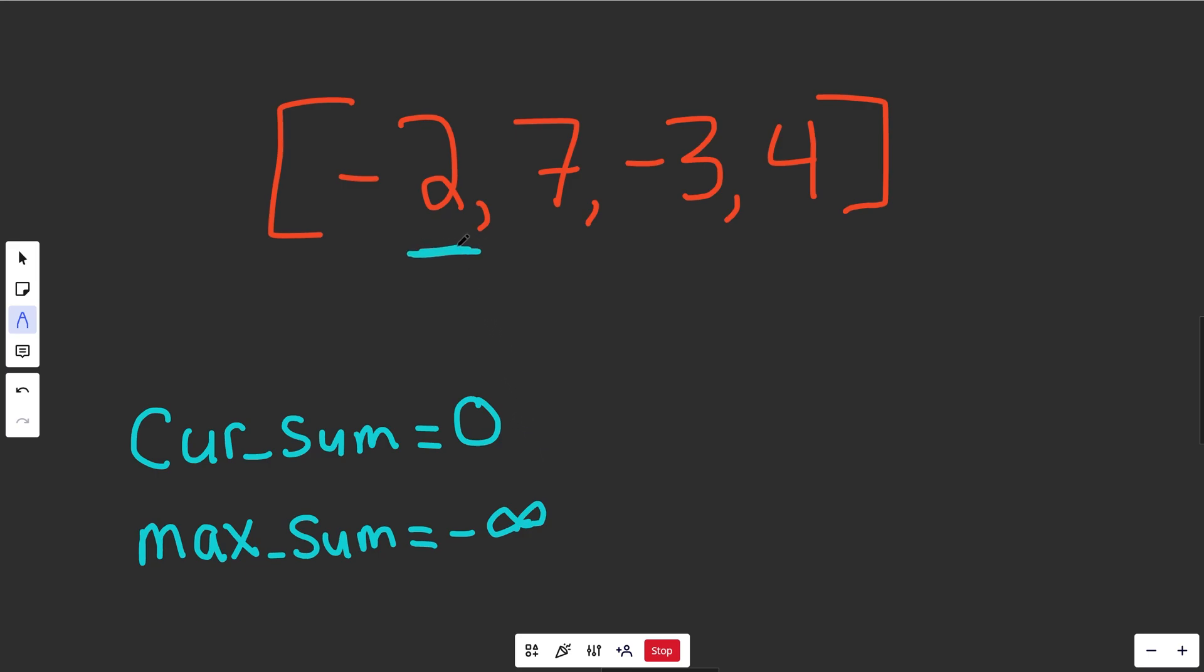If you look at the first value here, our current sum would go to negative 2. Now negative 2 actually is better than negative infinity. So you'd set your max sum to be a little bit better, which is negative 2. So far, our best is minus 2. And when we go to the next value, before we do that,